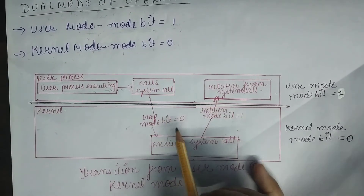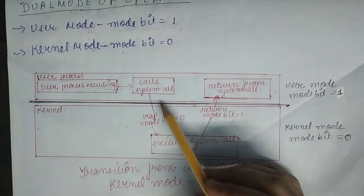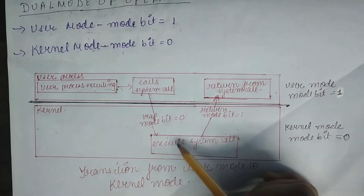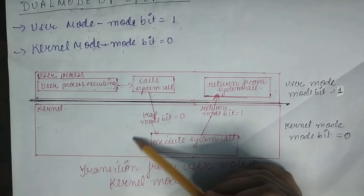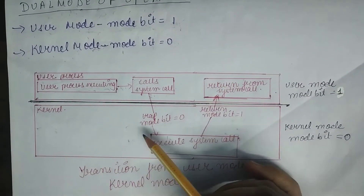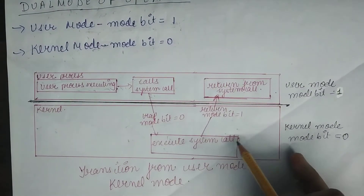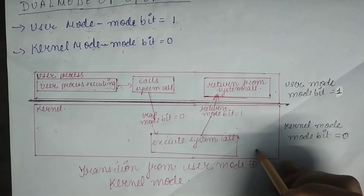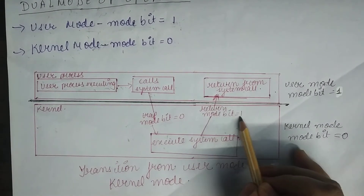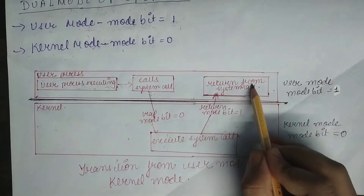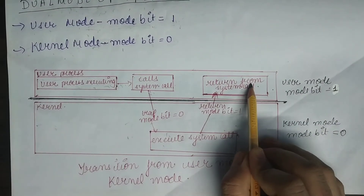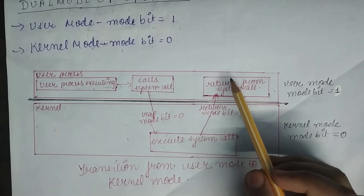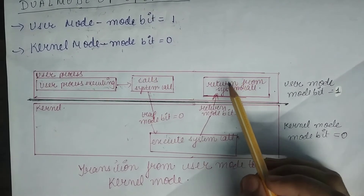For example, suppose it wants to take some input from the user. It will generate a system call, and then from user mode you will switch to kernel mode. The kernel mode will execute the system call, and once that system call is executed the mode bit will change back to one and you will go back to user mode. That's how the transition is done from user to kernel mode.